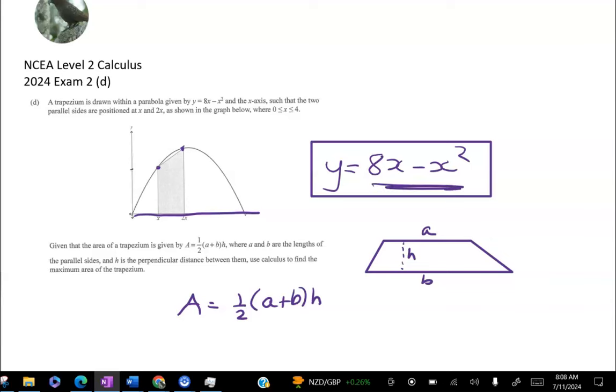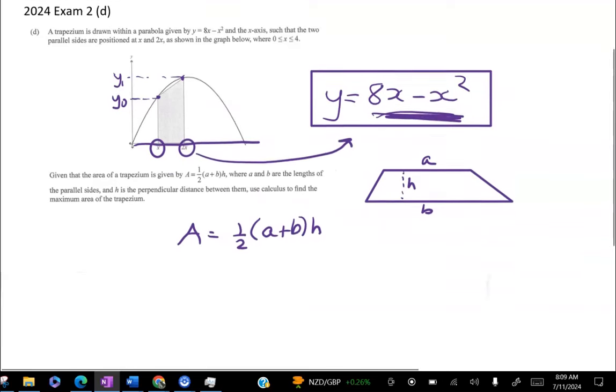So I'm going to start by calling this point here y0 and this point here y1. You don't have to do that, but it just makes it a bit clearer. So y0 is what happens when we substitute x into this function, and y1, this height, is what happens when we substitute 2x into this function.